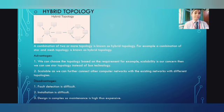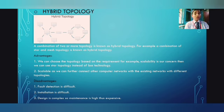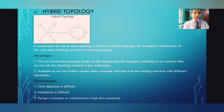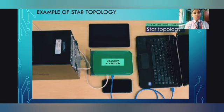The next topology is hybrid topology. As you can see in the picture, a combination of two or more topologies is known as hybrid topology. For example, a combination of star and mesh topology is known as hybrid topology. Advantages: we can choose the topology based on requirements — for example, if scalability is a concern, we can use star topology instead of bus topology. Disadvantages: fault detection is difficult, installation is difficult, design is complex, maintenance is high, and it is expensive.